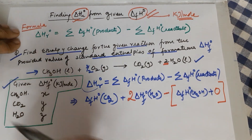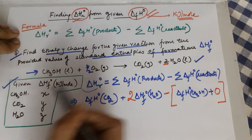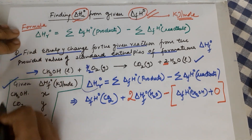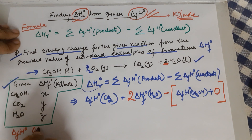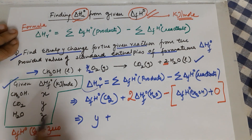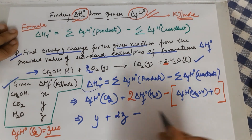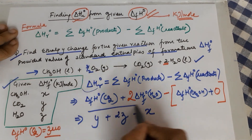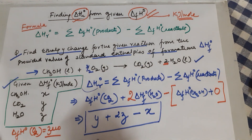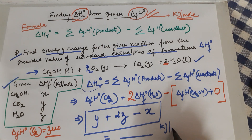In the reactant side, you also have oxygen — but remember, the enthalpy of formation of O₂ is zero because it is an element in its standard state. This value is not even given to you; never ask your teacher for it. So ΔHf°(O₂) = 0. Now substituting: ΔHf°(CO₂) = Y, ΔHf°(H₂O) = Z so it becomes 2Z, and ΔHf°(methanol) = X. The answer is Y + 2Z − X. Don't forget the units: kilojoules per mole.